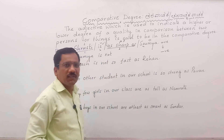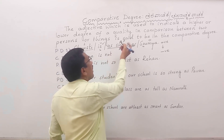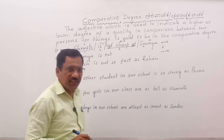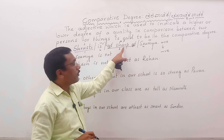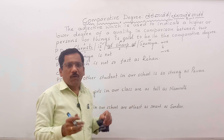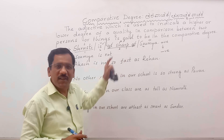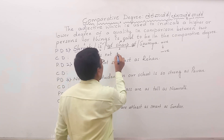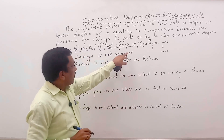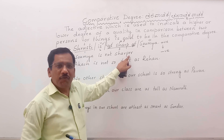We should write the word 'not'. And look at the adjective part — 'as...as' are cancelled. The remaining adjective is 'sharp'. When it changes to comparative form, it becomes 'sharper' — S-H-A-R-P-E-R. This is the comparative form.